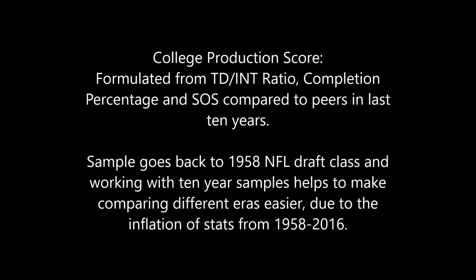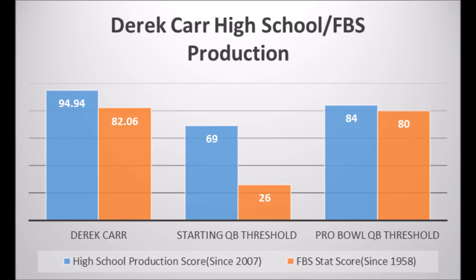There have obviously been elite quarterbacks that didn't come from great strength of schedules. The best example would probably be Steve Young in the 80s — BYU's strength of schedule wasn't great compared to Michigan and Ohio State. But he still scored in the 90th percentile for FBS because he was just so good that even with a poor schedule, the metric worked as a good barometer. Based on this data, Derek Carr scored an 82.06 out of 100 for his best single FBS season.